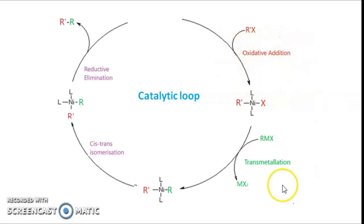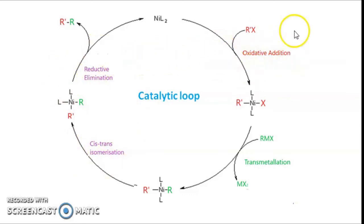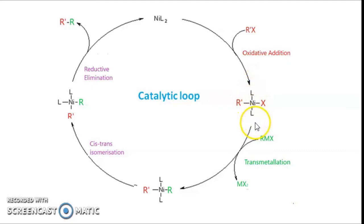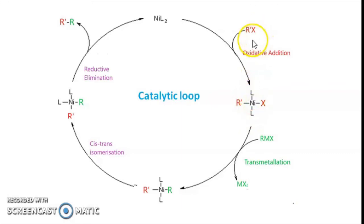Coming to the mechanism of any coupling reaction, the catalytic loop basically has four steps: oxidative addition, transmetallation, cis-trans isomerization, and reductive elimination. In oxidative addition, the alkyl halide and the palladium or nickel catalyst come together, and the catalyst gets inserted between the alkyl group and the halogen group. The nickel or palladium, which was in zero oxidation state, is changed to plus two oxidation state.